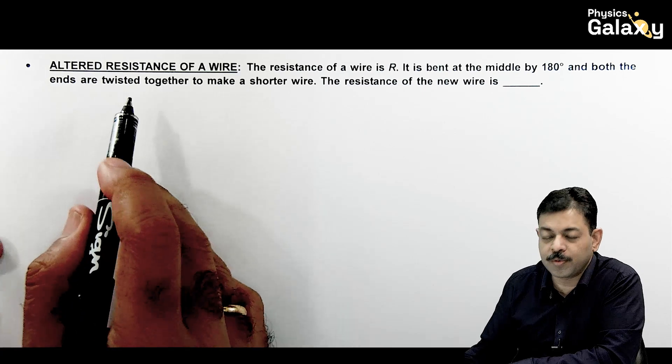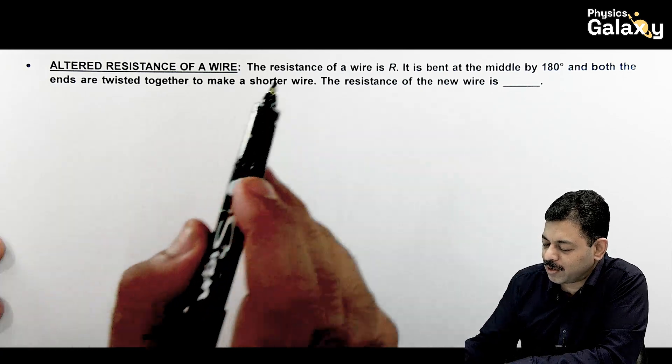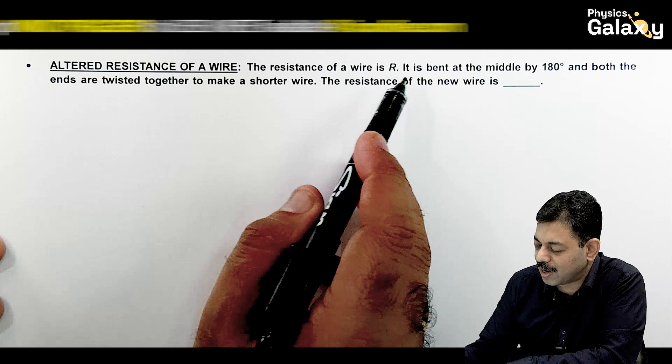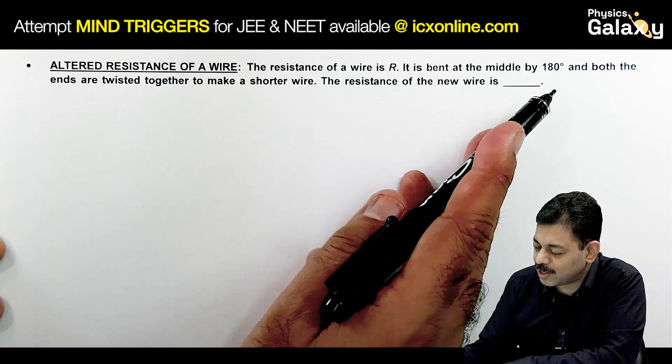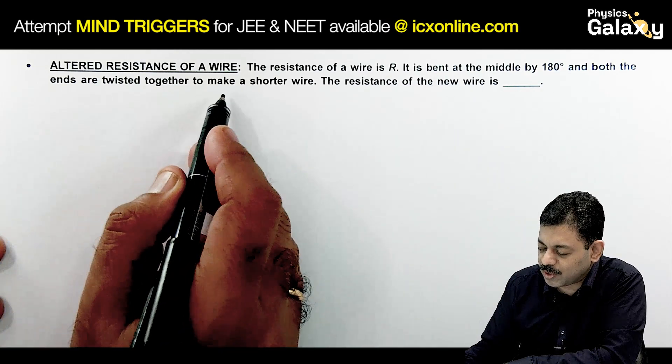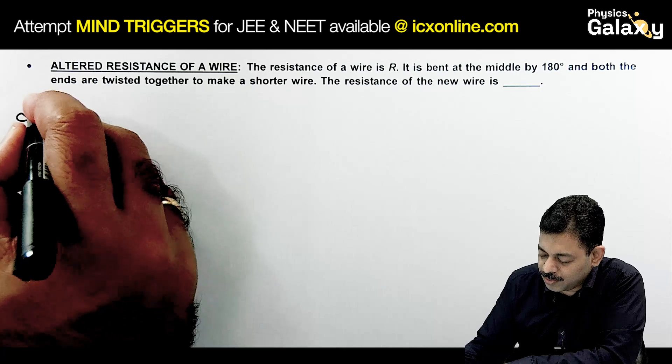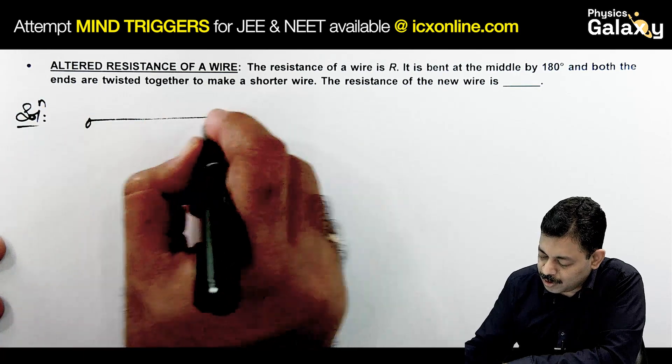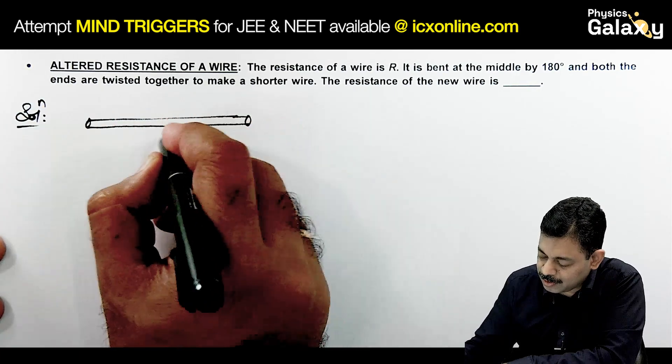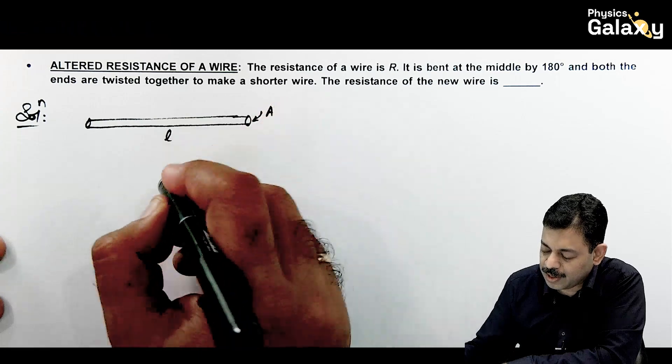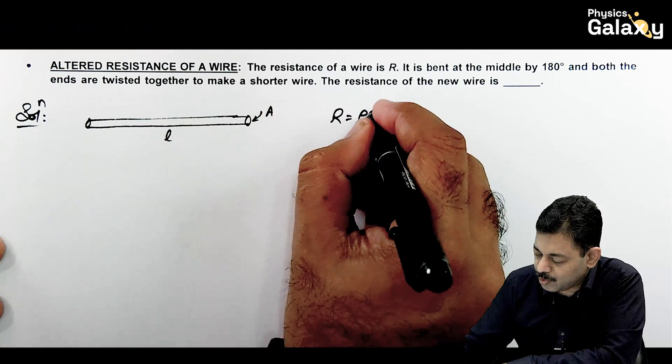Here we will talk about the altered resistance of a wire. The situation is: the resistance of a wire is R. It is bent at the middle by 180 degrees and both the ends are twisted together to make a shorter wire. If we see the situation, we have a wire of length L and cross sectional area A. So its resistance we write as rho L by A.